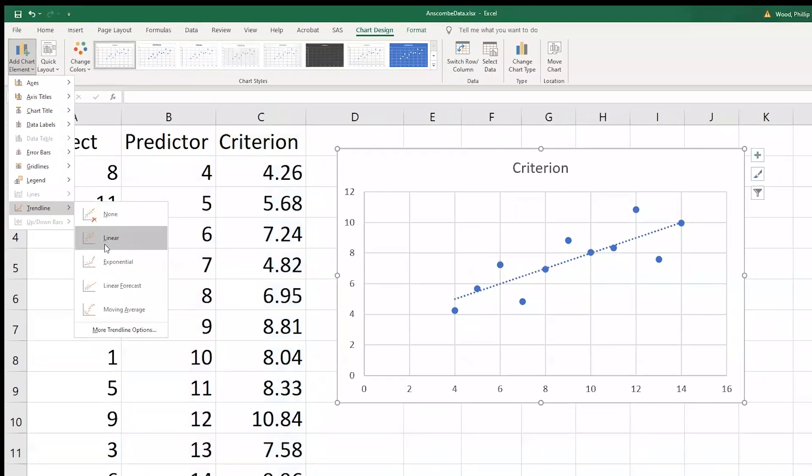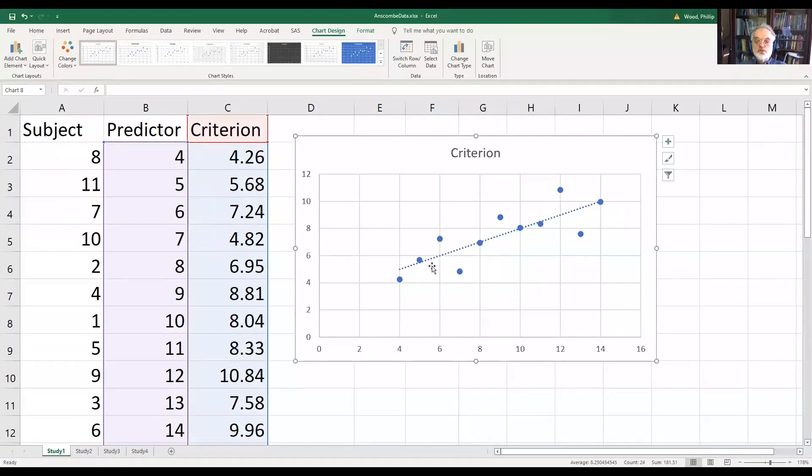And instead of none, we say we want a linear trend line, and you'll see that there's a straight line here that describes the regression line.